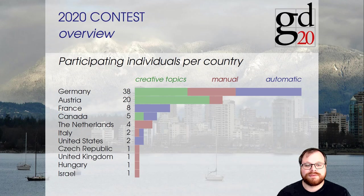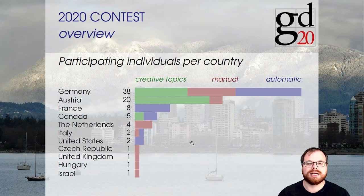As for the participants, like for the conference, most were from Germany at 38, but we also had 20 from Austria, 8 from France, 5 from Canada, 4 from the Netherlands, 2 each from Italy and the United States, and 1 each from Czech Republic, United Kingdom, Hungary, and Israel.